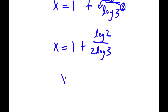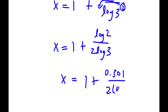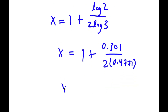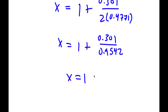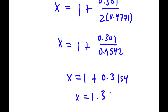Log 2 equals 0.301, and 2 times log 3 is 2 times 0.4771, which equals 0.9542. And 0.301 divided by 0.9542 is 0.3154. So combining these two, I get x equals 1.3154. This is my answer.